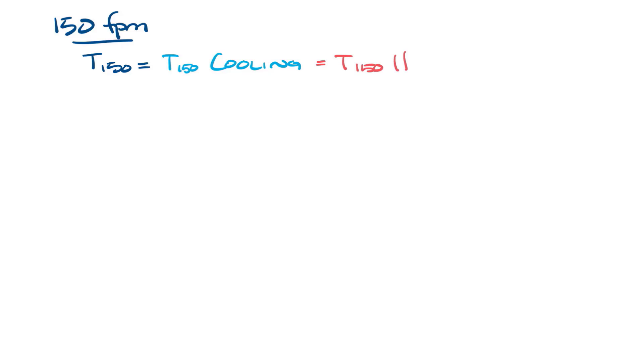So going back to our 5-7-13 throw example, this means that 75 degree air, 55 degree air, or 90 degree air will have the velocity of 150 feet per minute at five feet from the diffuser.